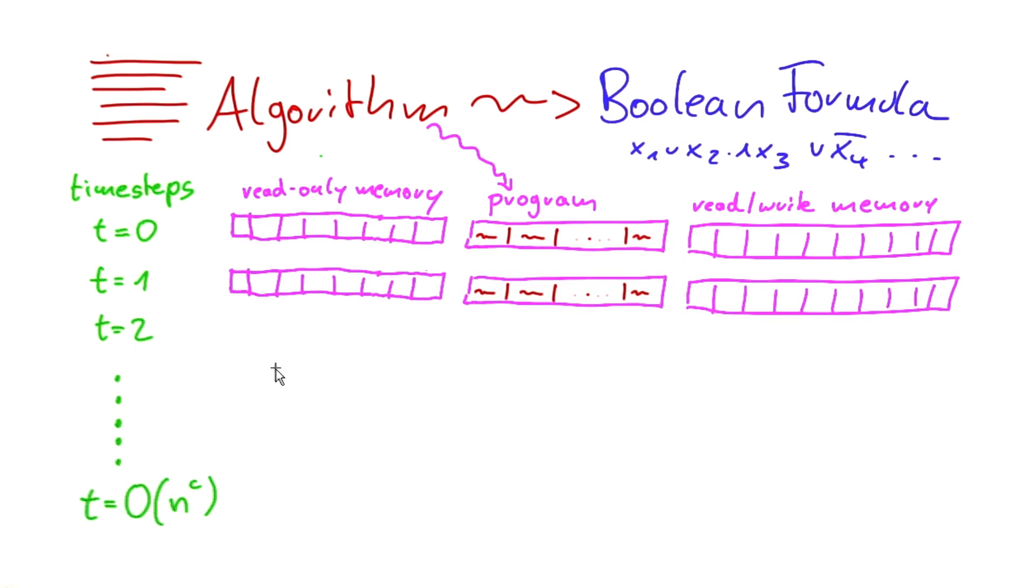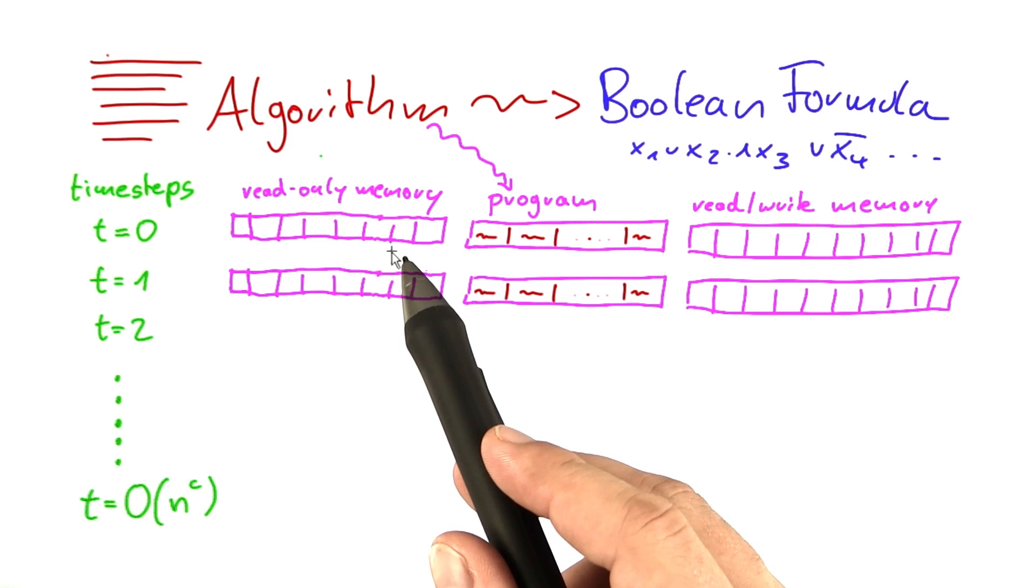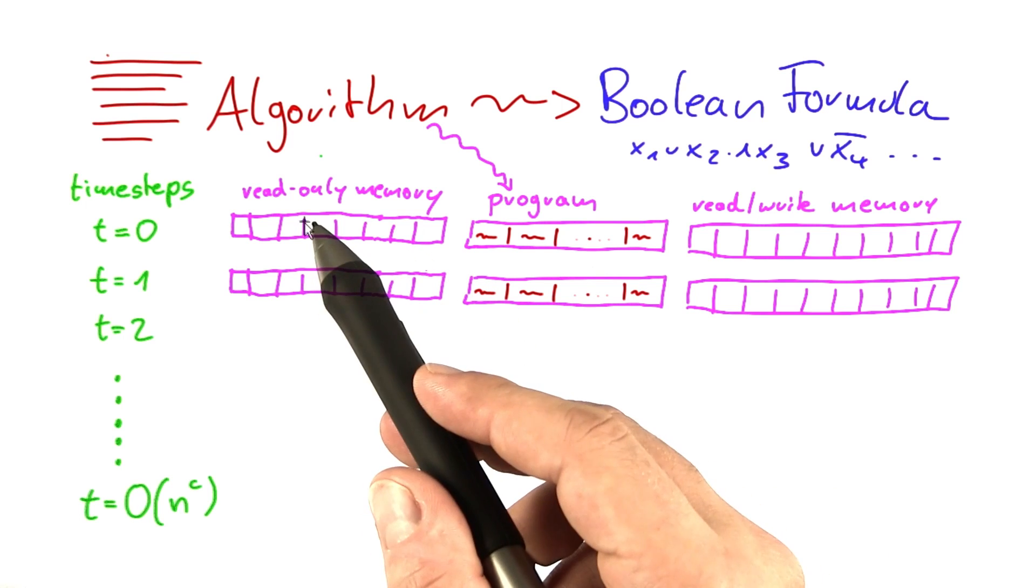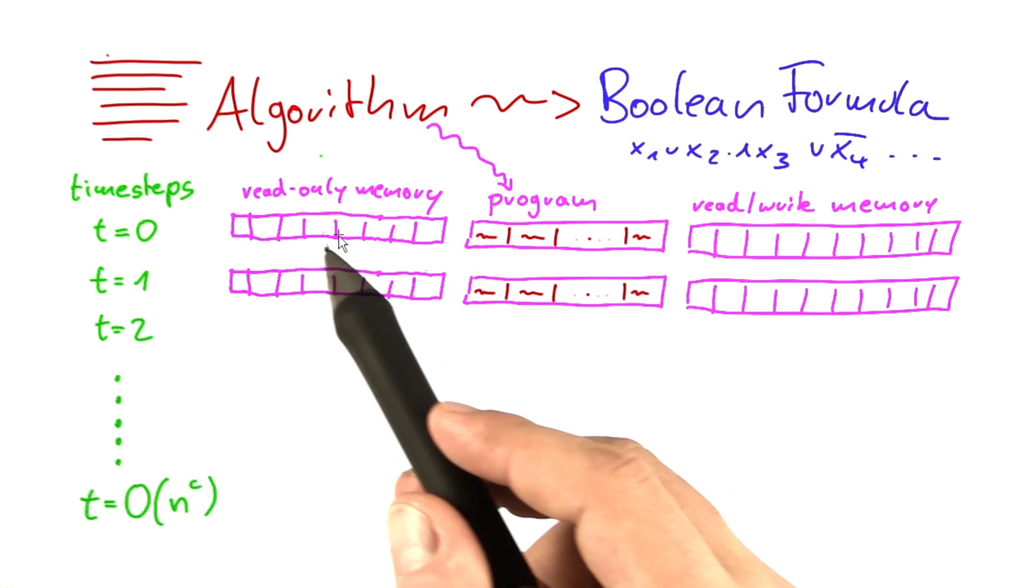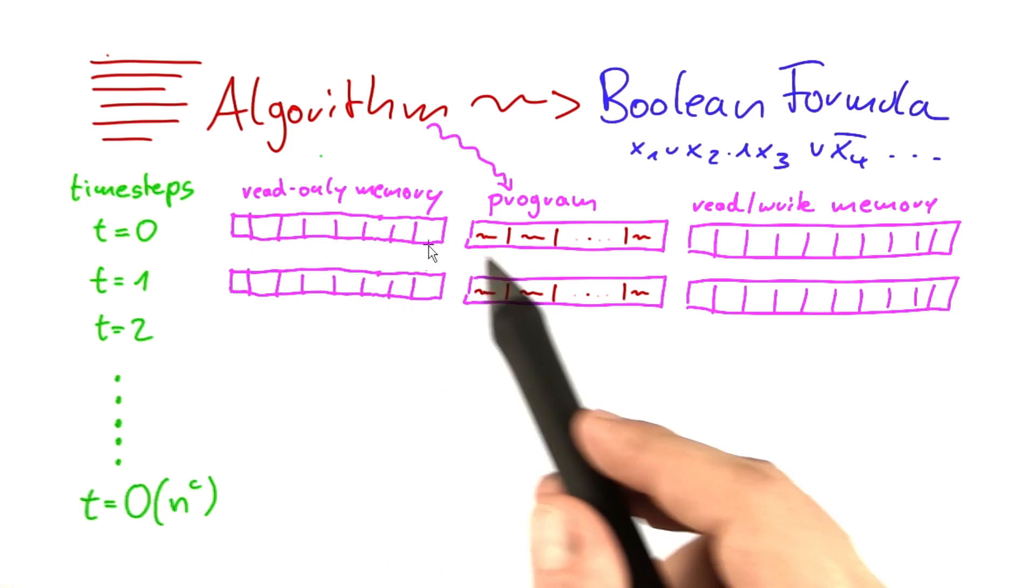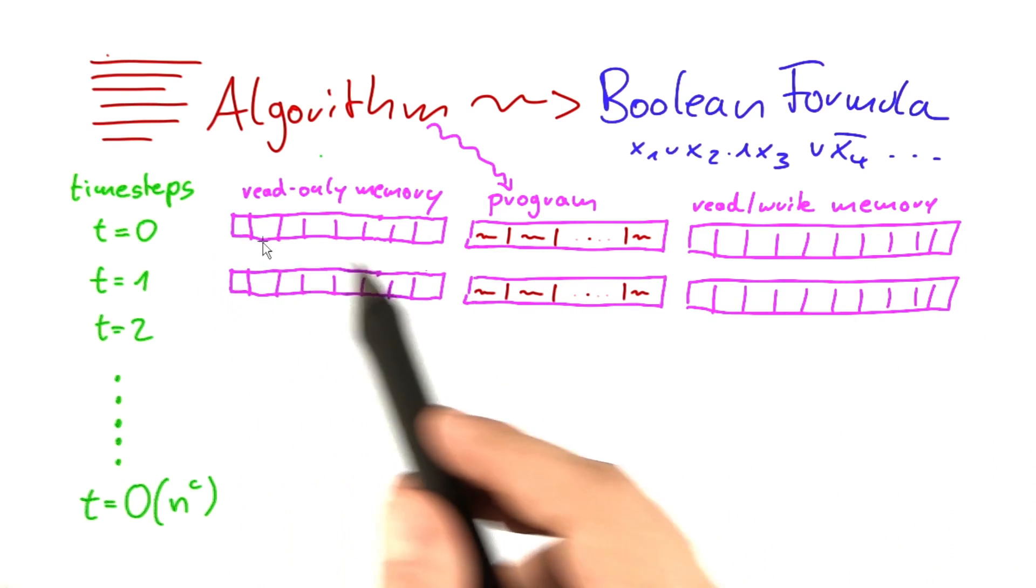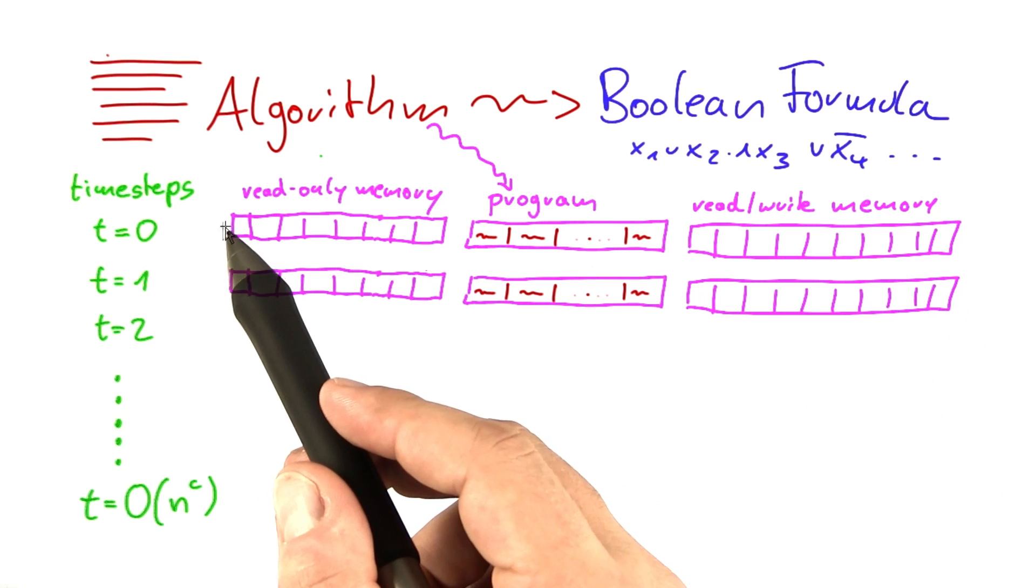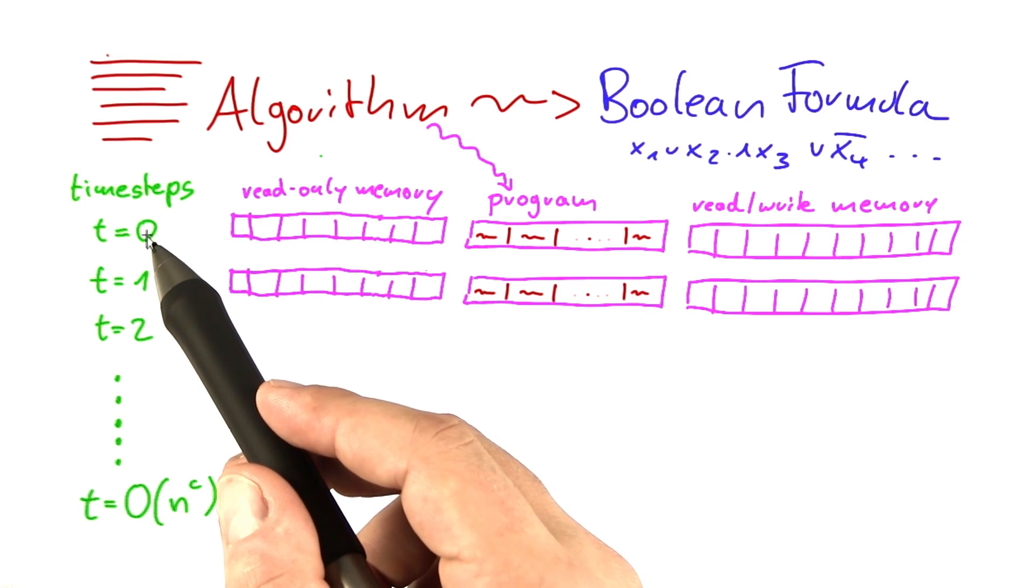And now comes the neat part that Cook and Levin observed. Because what they observed is that when you look at an algorithm working on the RAM, then you can depict that as a number of these snapshots.